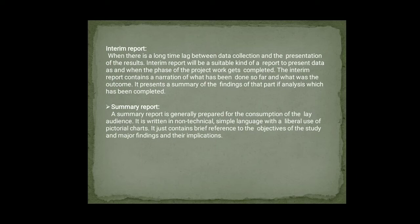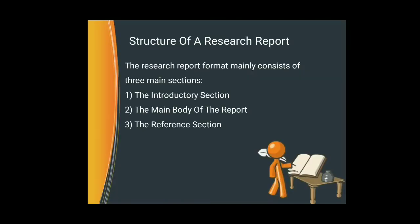The summary report just contains brief reference to the object of study and major findings and their implications. These types of reports are generally used in study reports, like in college and university student work and for other purposes. Now next is the structure of the research report. The research report format mainly consists of three main sections: the first section is the introductory section, the second is the main body of the report, and the third is the reference section.